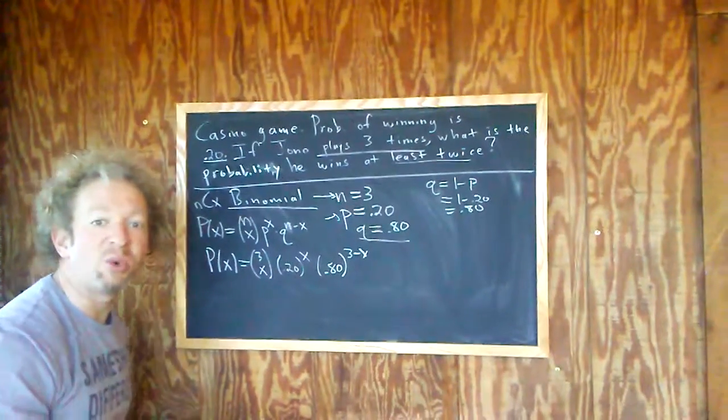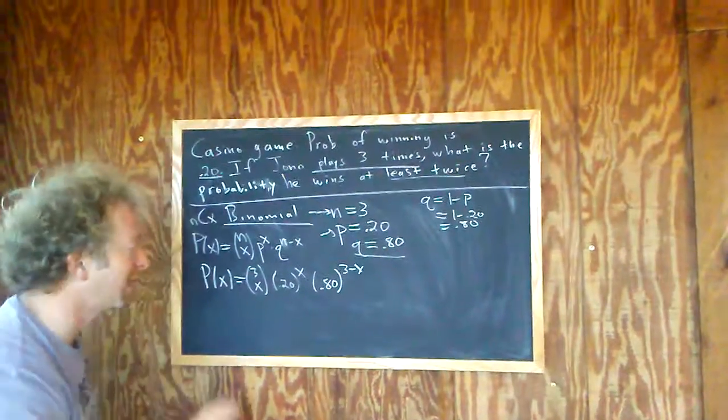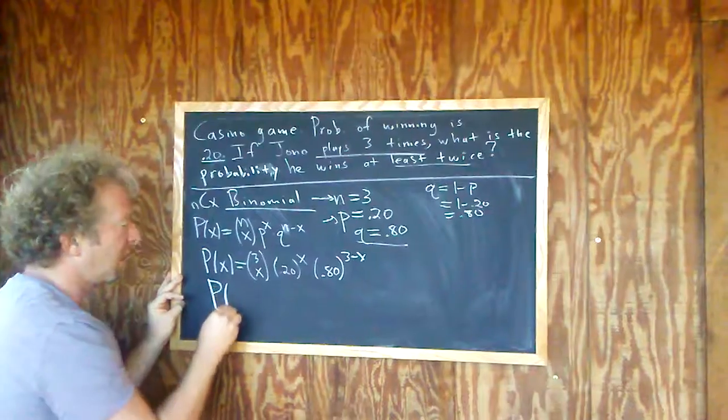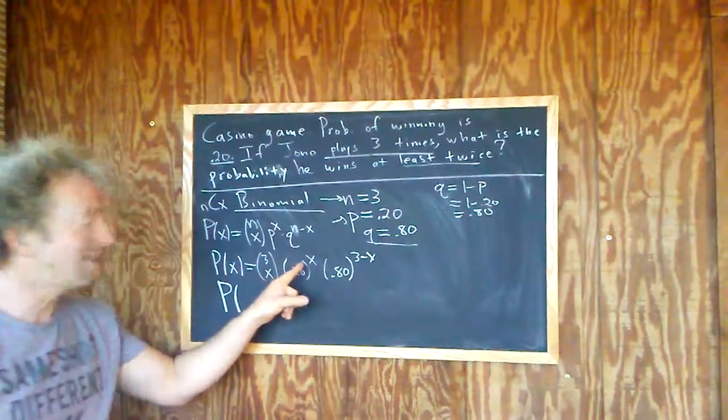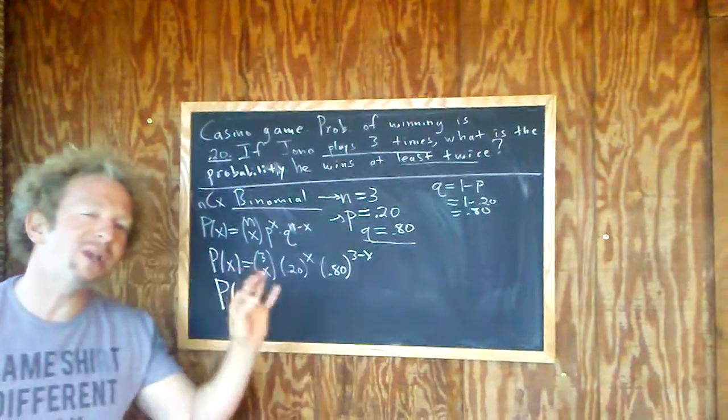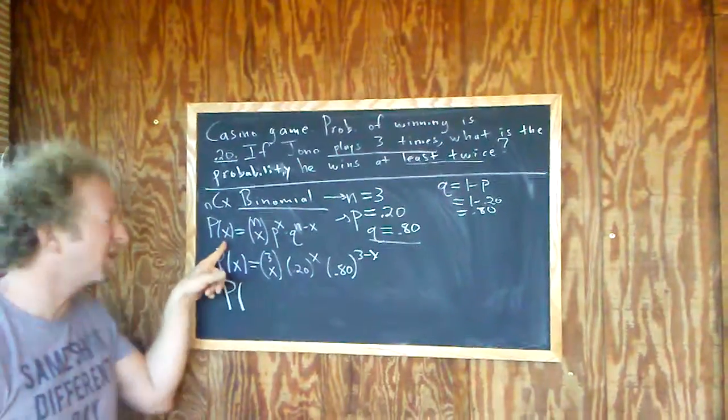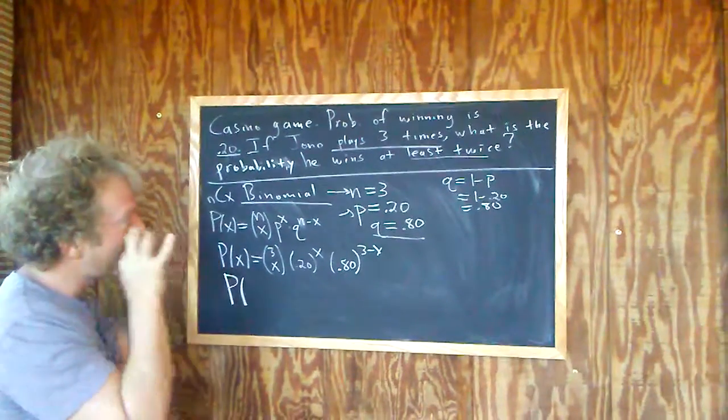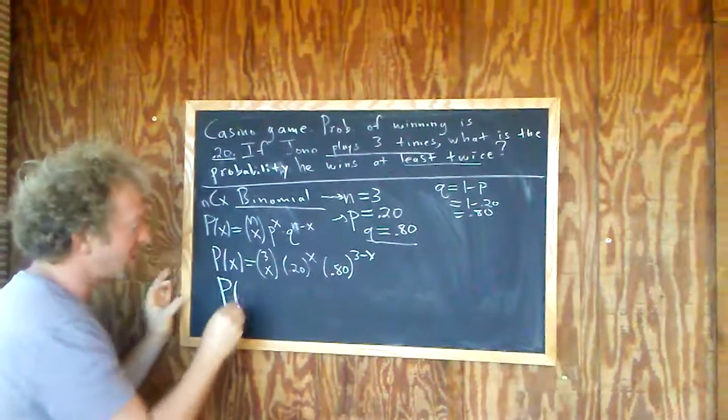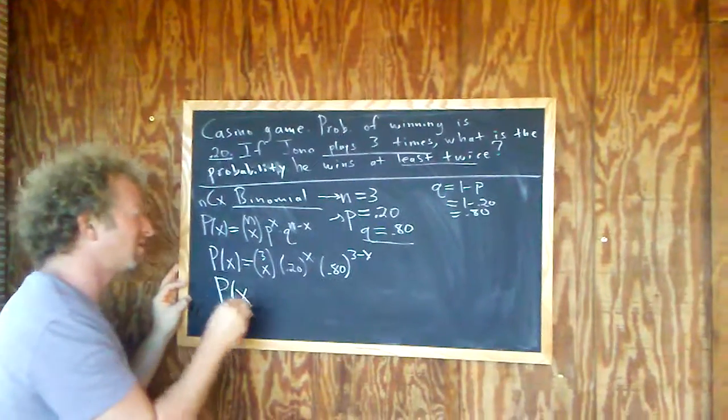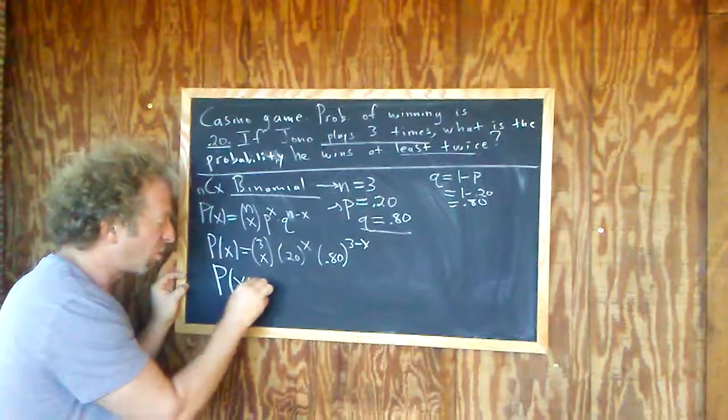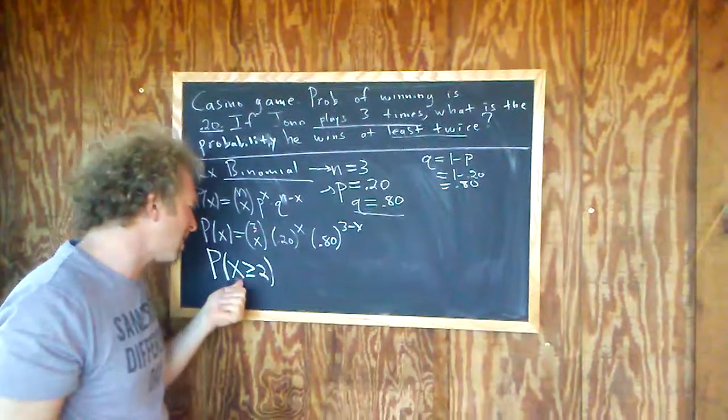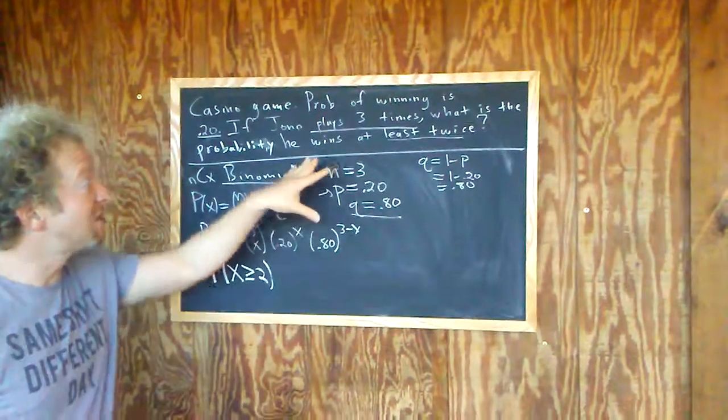So now we have to find the probability that he wins at least twice, right? So at least twice. So P of at least twice. So X here is the number of times he wins the game, right? Because this is the probability of exactly X successes, right? So X is the number of times he wins. So we want him to win at least twice. So X has to be greater than or equal to two.